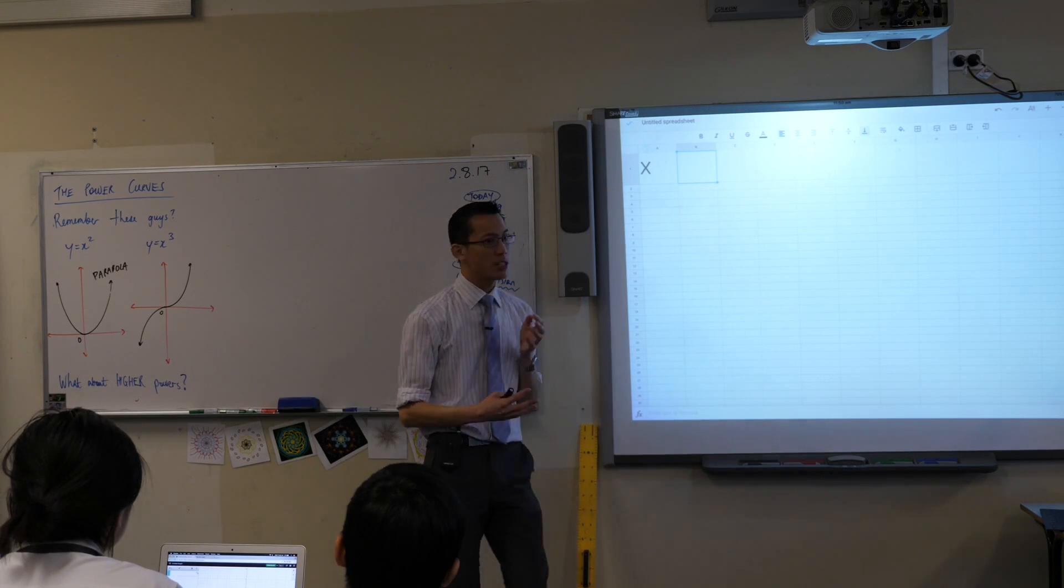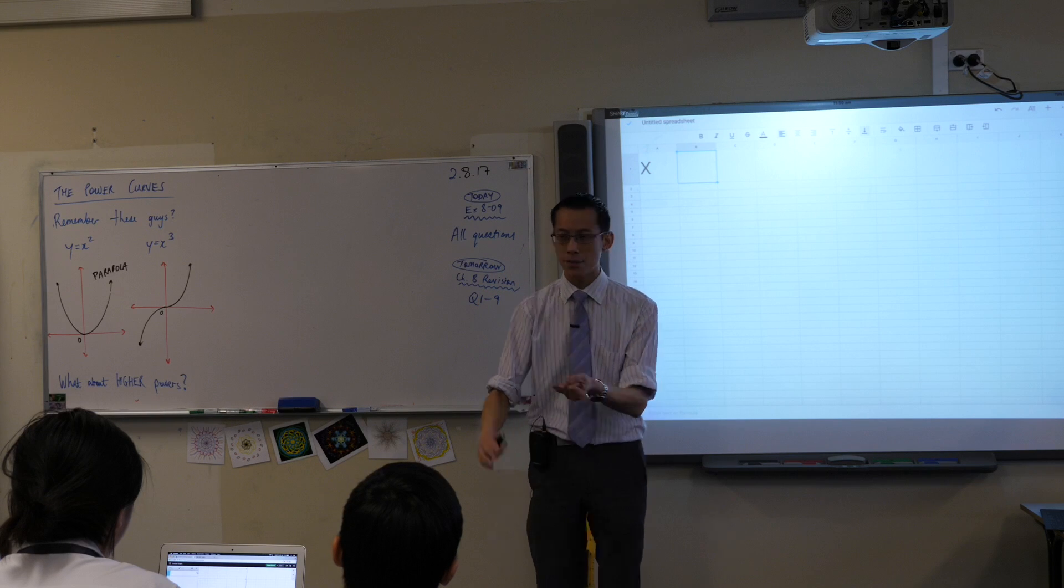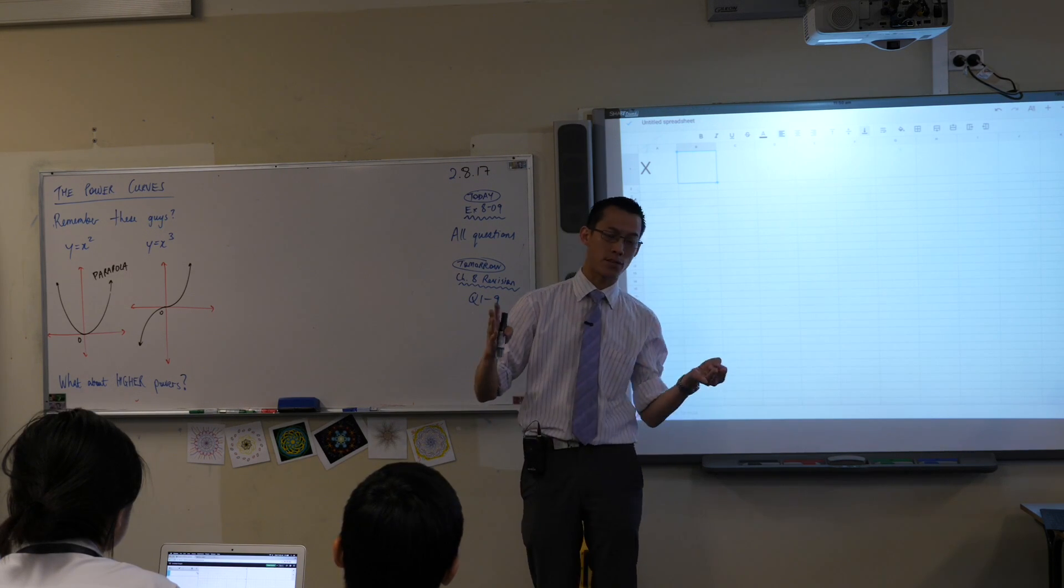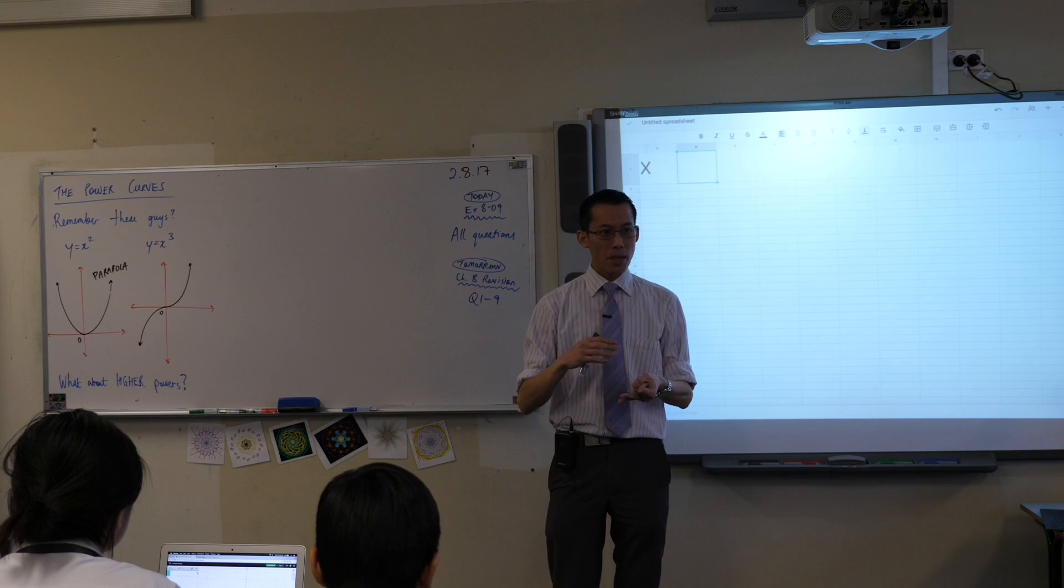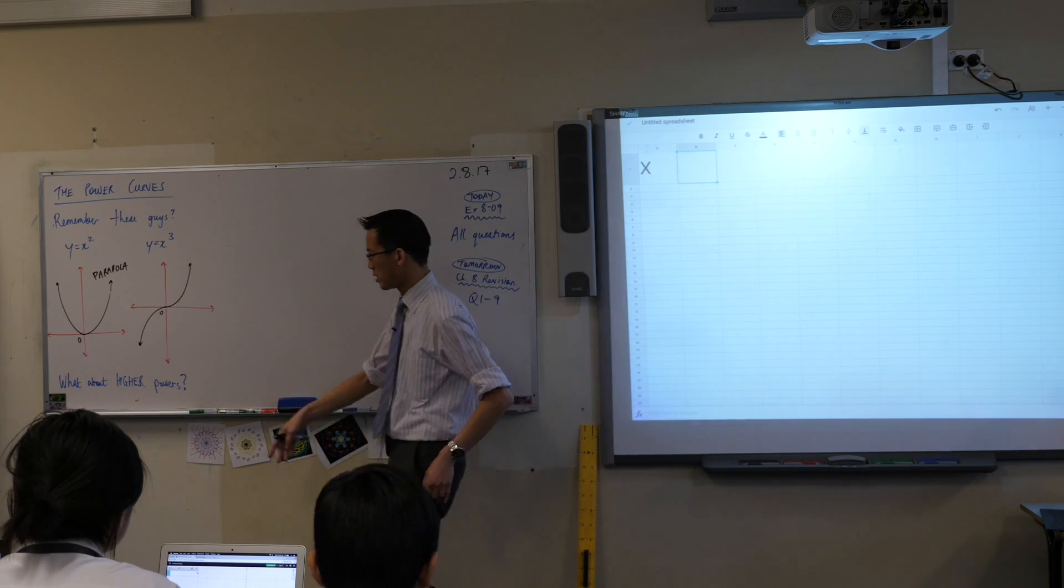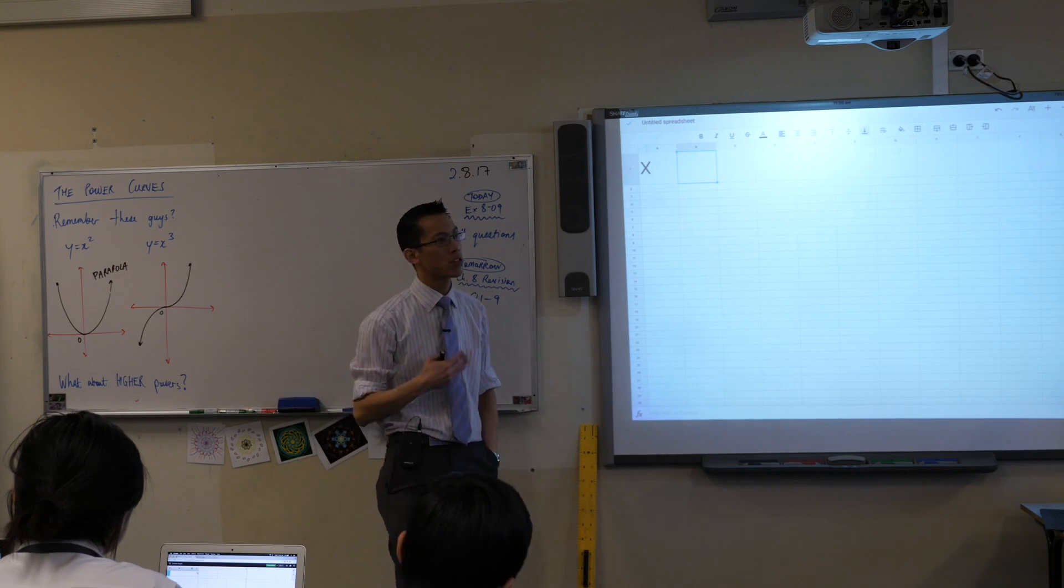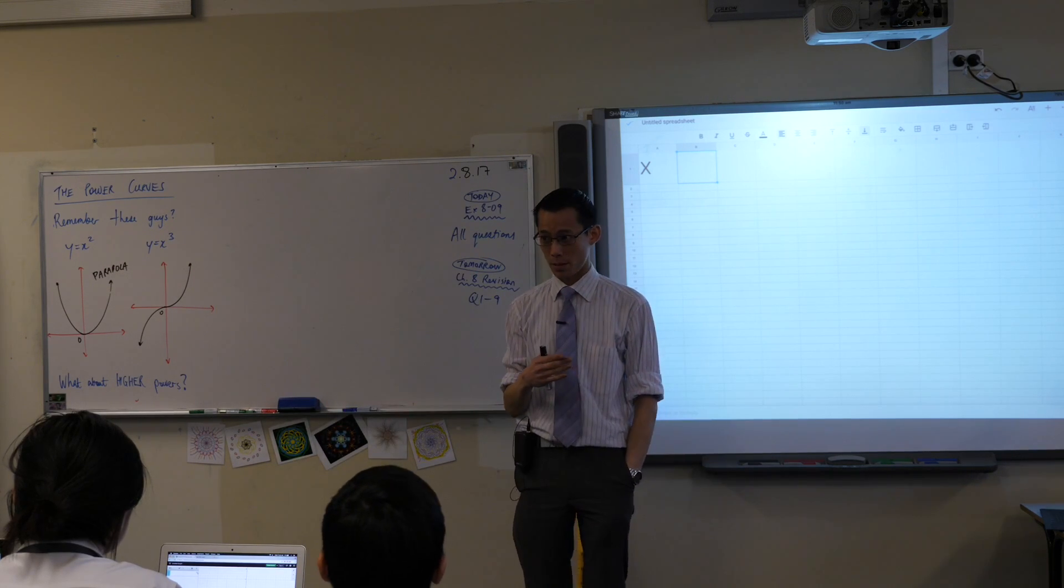Now we notice there were similarities but there were differences. They're both curved, they both have some kind of symmetry, though they have different symmetries to each other. So now the question I want to pose is what about if we push these powers higher, see there's a two and a three there. What if we push them up higher? What happens?